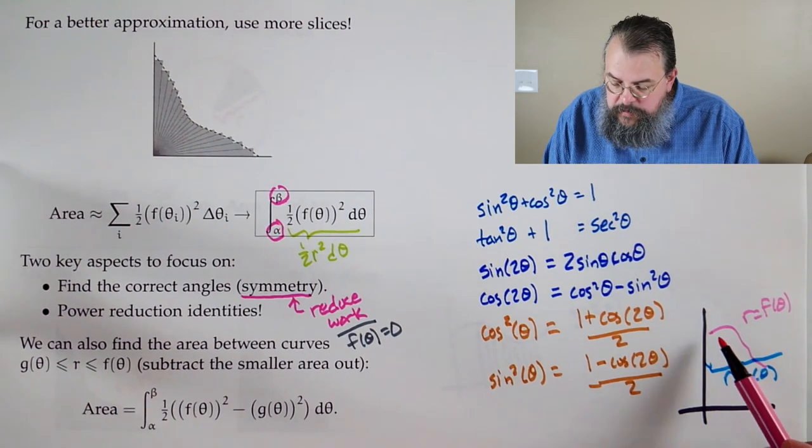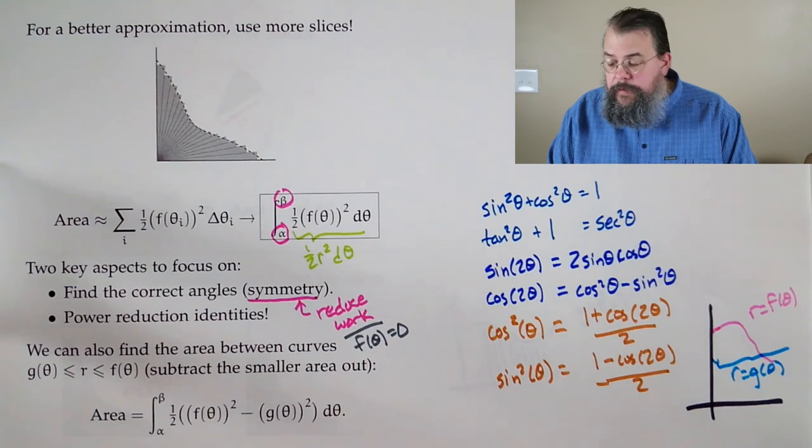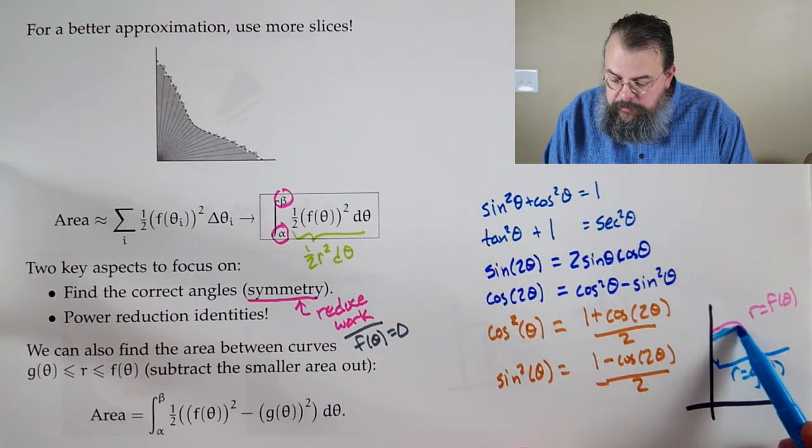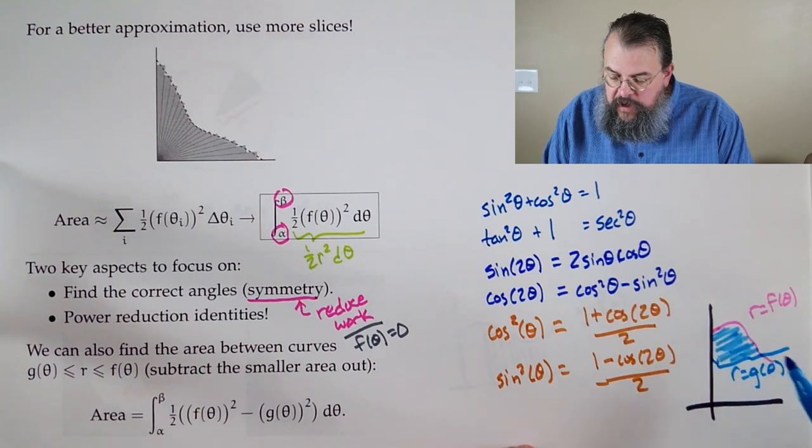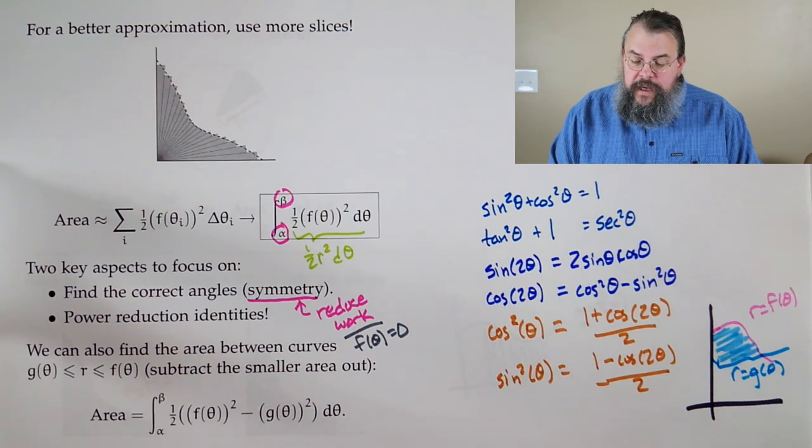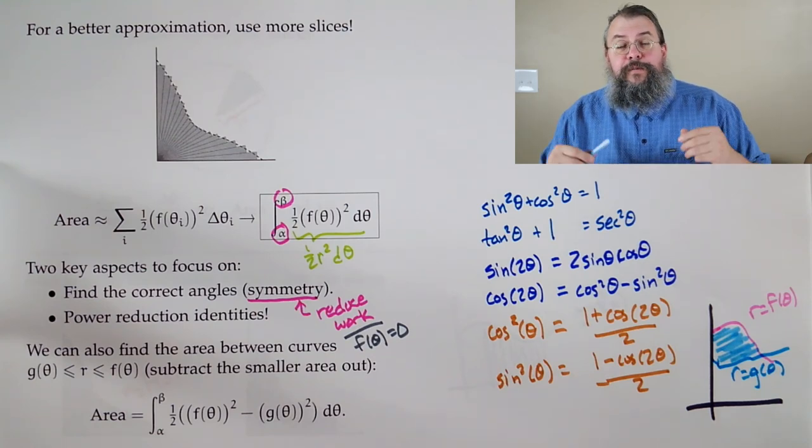And so, for instance, you might have something like the following picture, and you're asked to find the area, let's say it's this part right here. All right. So, what do you do? Well, the answer is, of course, is you subtract out. So, this is oftentimes the way we think of it, right?